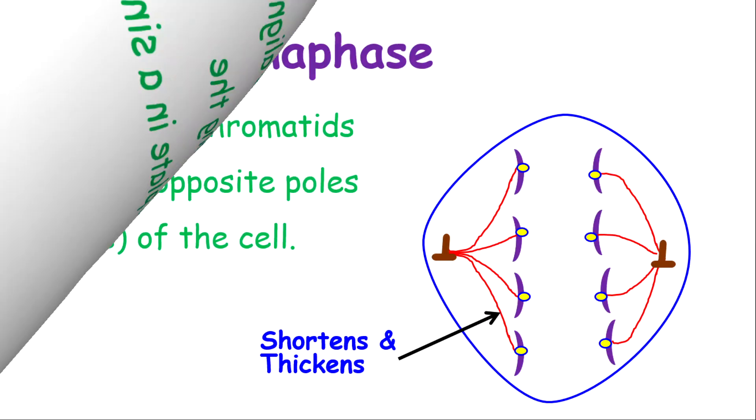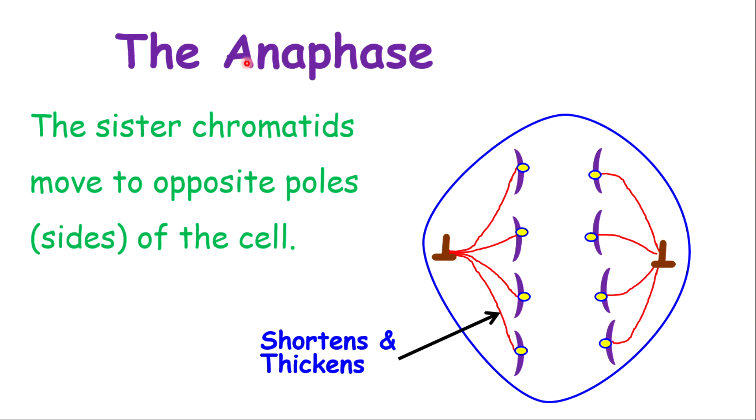The next phase is known as the anaphase. Think about the A as being antisocial. If you're antisocial, you want to move away from other persons. In this stage, the sister chromatids move to opposite poles or opposite sides of the cell. How this is happening is simple: the spindle fibers become shorter and thicker. If they're getting shorter, the anchors provide reinforcement, and the ropes are pulling in, then the chromatids will move to opposite sides or opposite poles of the cell.